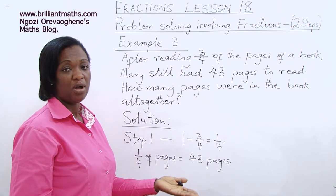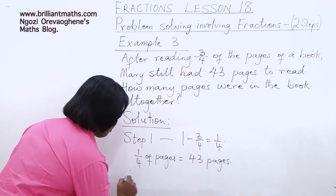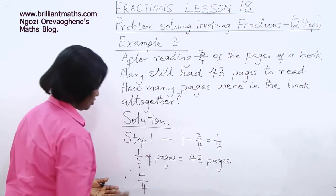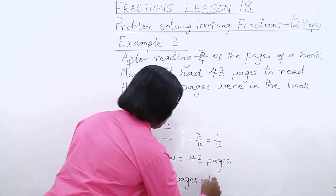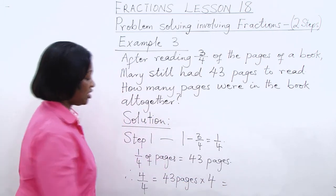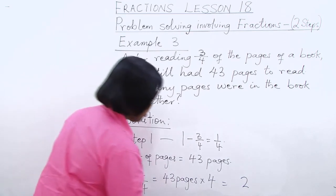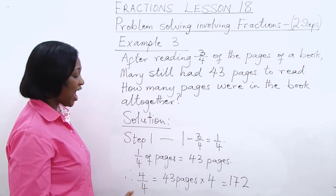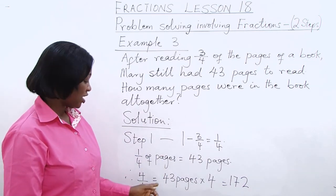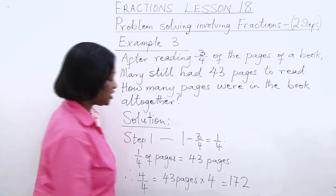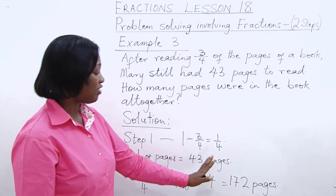One quarter is one part out of four, so the whole book — four parts out of four — is 43 times 4. Four times three is 12, carry one. Four times four is 16, plus one is 17. So the book has a total of 172 pages. The book originally has 172 pages; Mary has read three-quarters and has 43 pages left.